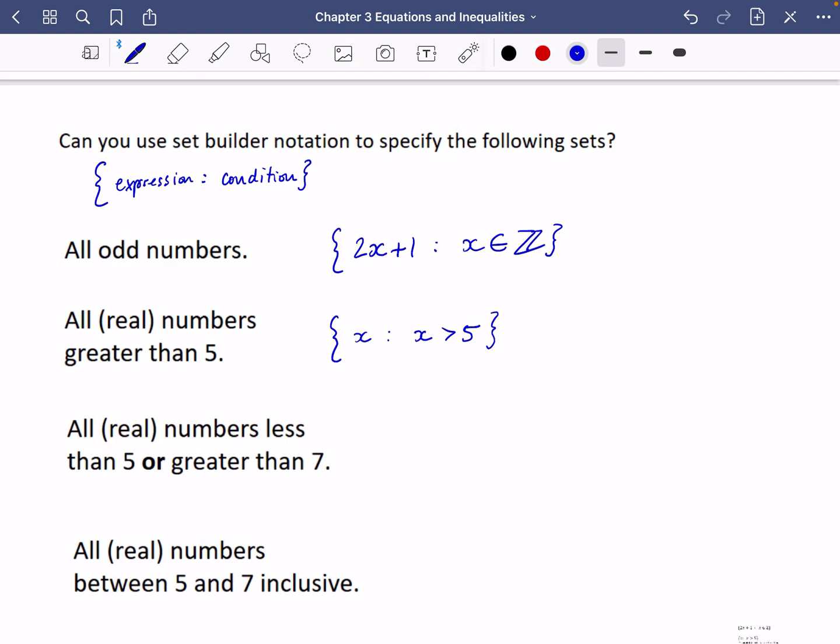This one wants us to do the real numbers which are less than five or greater than seven. So I'm going to do first of all, this is my x, I want it to be less than five, and I'm going to close this off. Or I'm going to say that x has got to be greater than seven. So I want it to be less than five or greater than seven.